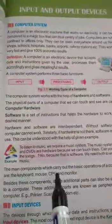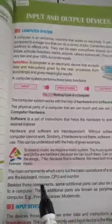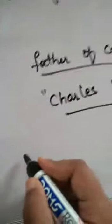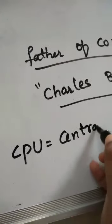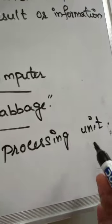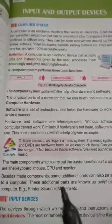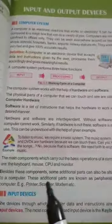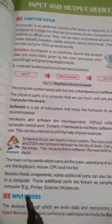The main components which carry out the basic operations of a computer are the keyboard, mouse, CPU, and monitor. The full form of CPU is Central Processing Unit. Besides these, some additional parts can also be attached to a computer — these are known as peripherals, for example, printer, scanner, modem, etc.